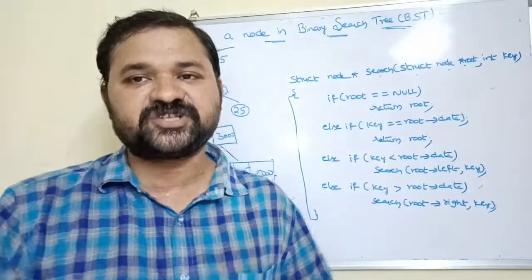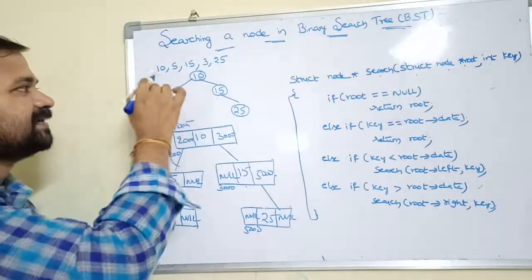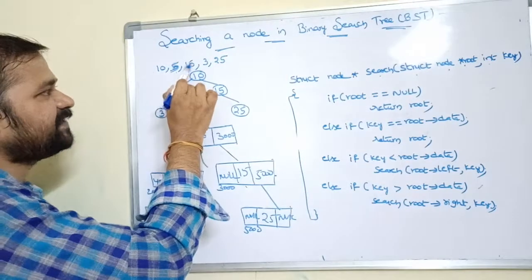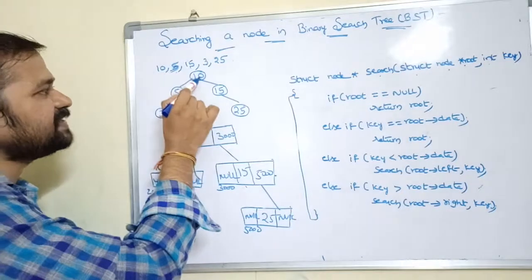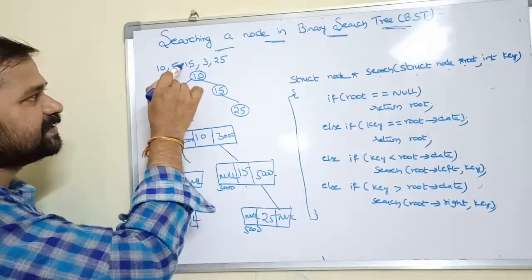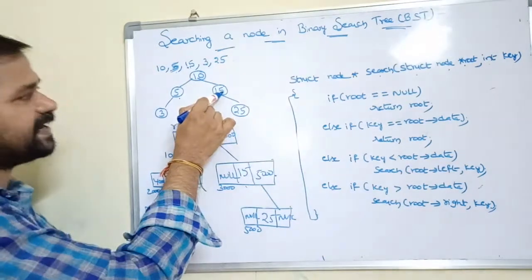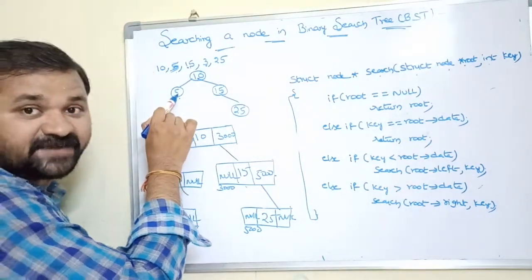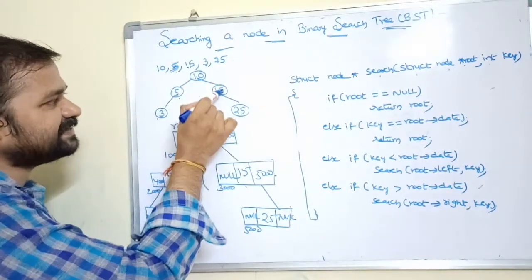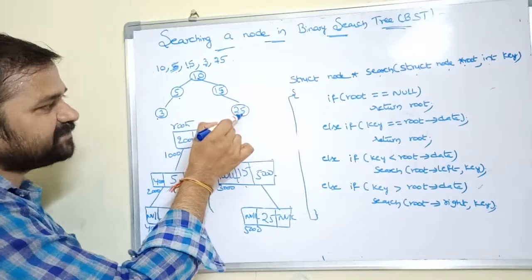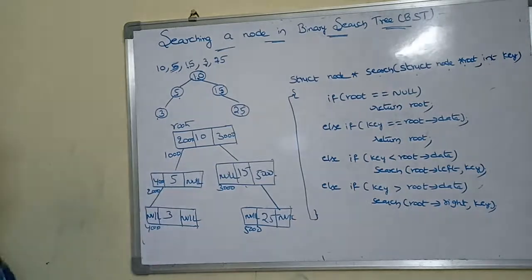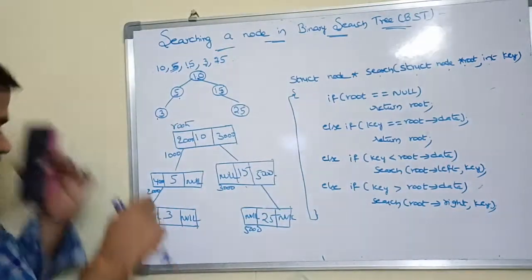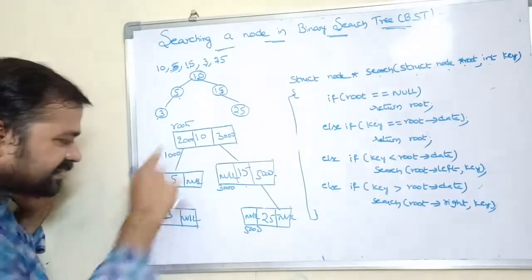Initially, we call the search function from the main function after constructing the binary search tree. The tree has nodes: 10, 5, 15, 3, and 25. Node 10 is the root. Since 5 < 10, it goes left. Since 15 > 10, it goes right. Since 3 < 10 and 3 < 5, it goes to the left of 5. Since 25 > 10 and 25 > 15, it goes to the right of 15.